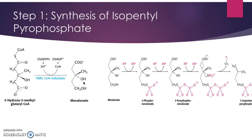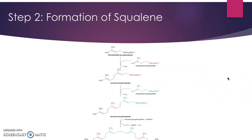From there, mevalonate is converted into isopentyl pyrophosphate. This is done in three reactions, all of which require ATP. The product of this reaction is isopentyl pyrophosphate, which is a 5-carbon isoprene unit. The next step in cholesterol biosynthesis is the formation of squalene.